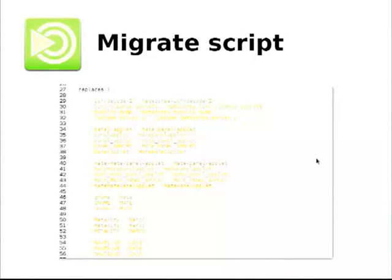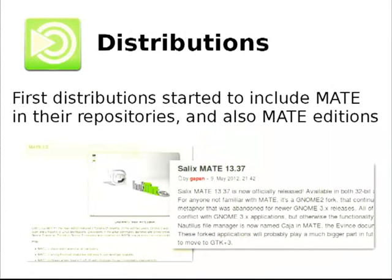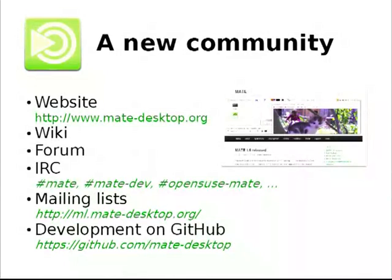It came with a lot of bugs. But even if the first release of MATE was not perfect, a lot of distributions started to include MATE in their repositories. Some distributions like Linux Mint or Salix started to release MATE editions of their distribution with MATE as the default desktop. And this brought a new community behind this new desktop environment.